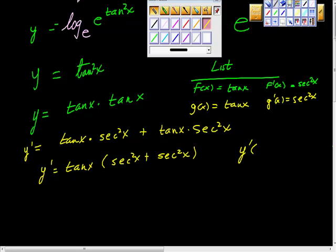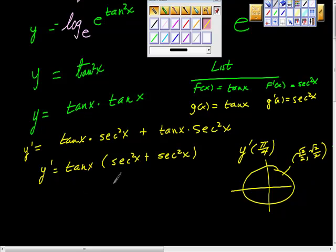What if you were asked to evaluate y prime at pi fourths? So, that would have a numeric value. So, from here, what is tan of pi fourths? Of course, you're on the unit circle, you're at 45 degrees, which has a cosine value of square root 2 over 2, a sine value of square root 2 over 2. So, tan of this is this over this, which is 1. So, that's 1.